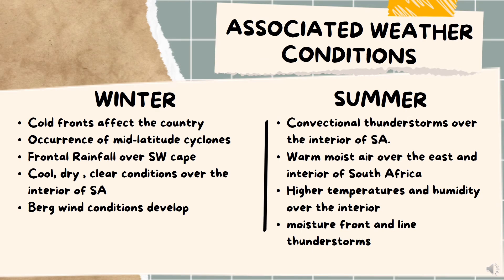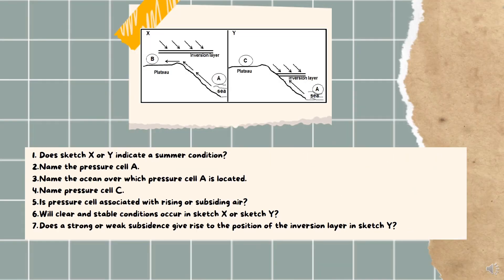These are the associated weather conditions you need to know for the exam. One thing to add is that there is an occurrence of berg winds in winter — I won't cover that in this video, but let me know in the comments if you'd like me to. In summer, there is also something called the moisture line and line thunderstorms — also indicate in the comments if you want me to explain that. You will be examined on both of those.